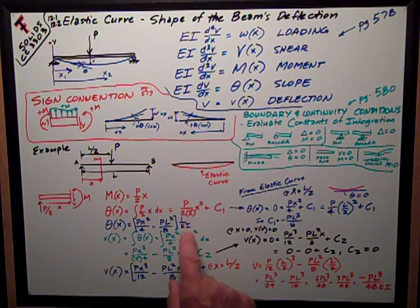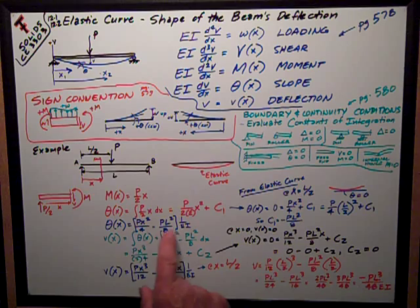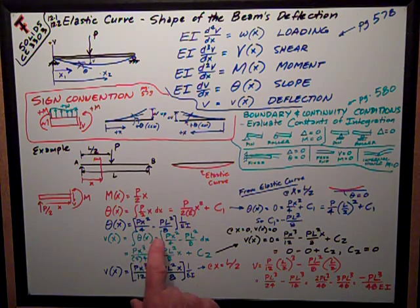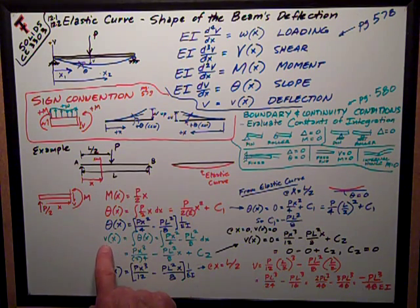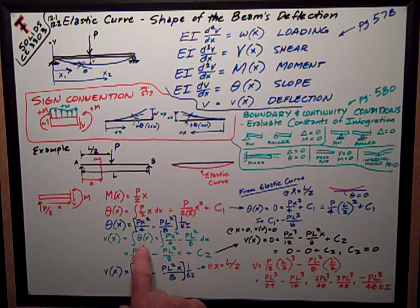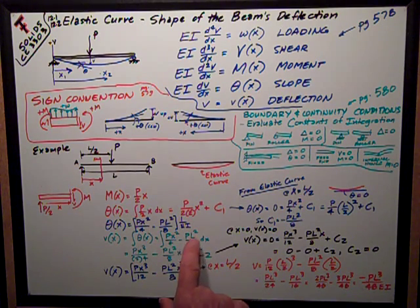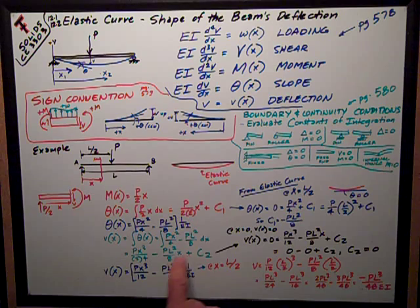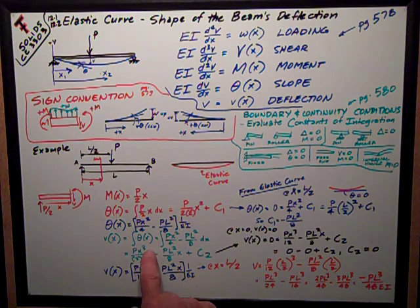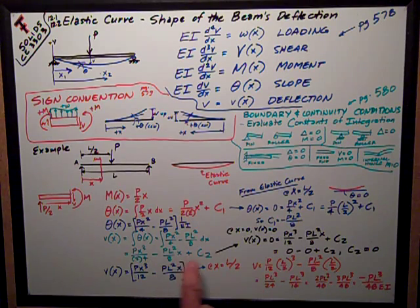Once again, I'm going to drop the EI out of it. I'm going to integrate this function, the slope function, one more time to get the deflection equation, which is the elastic curve. So it's the integral of PX squared over 4 minus PL squared over 8 dX. Integrate that once, and I get PX cubed over 12 minus PL squared over 8 X plus another constant of integration C2.